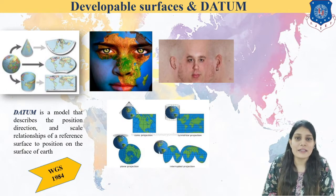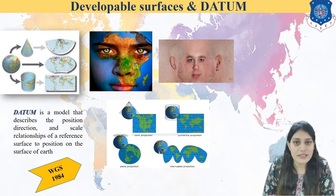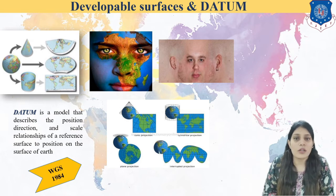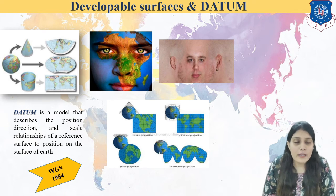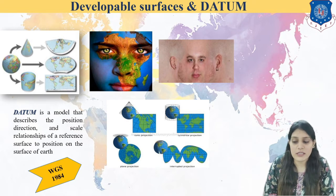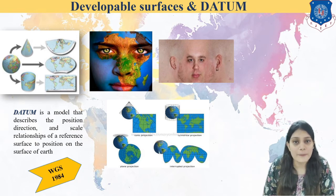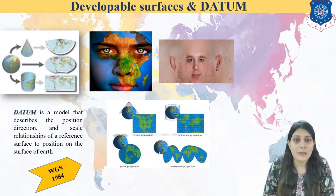You can see here how it is converted — the developable surfaces. When you are converting, you are flattening it, and that is known as developable surfaces. Now the very important terminology that arises here is datum — what you understand by datum is the data that describes the position relationship with reference to the surface of the earth. The actual position on the surface of the earth is known as datum.